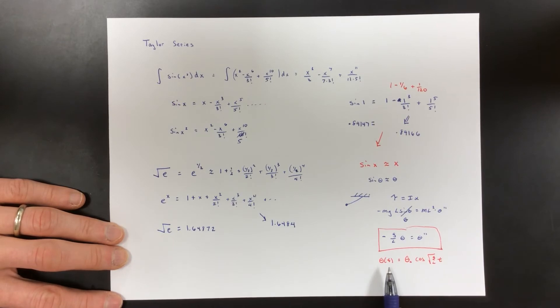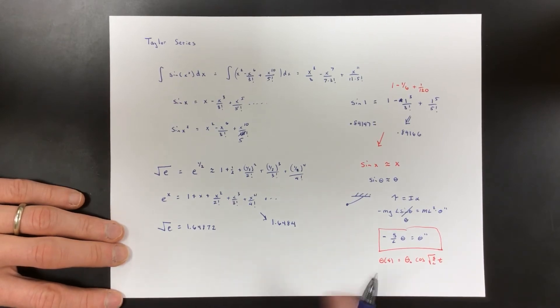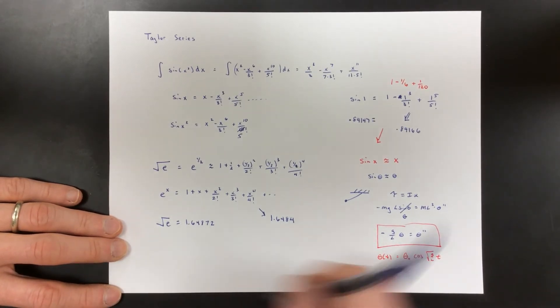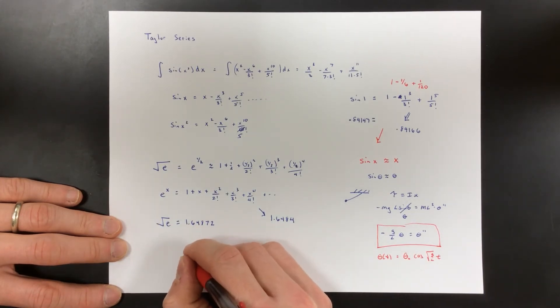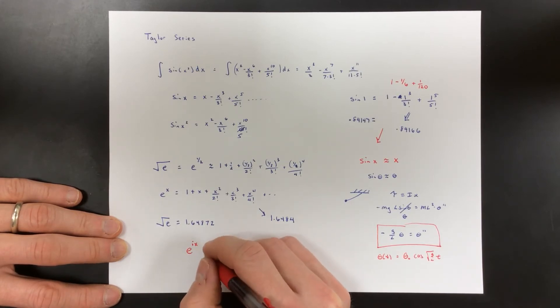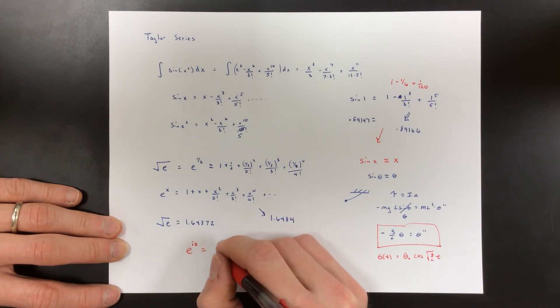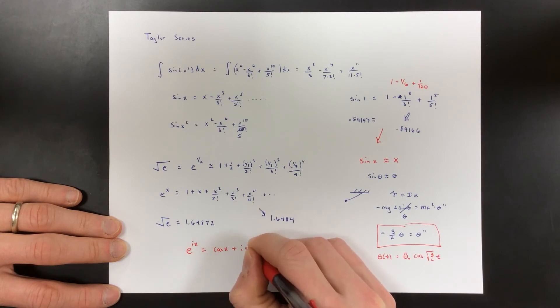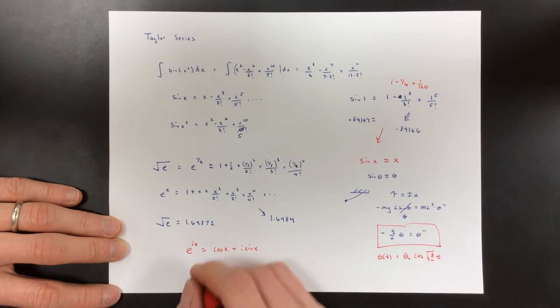There's one more super important one that's a pretty obvious application but it's way beyond this course: e to the ix. And this will actually give us Euler's formula - e to the ix equals cosine x plus i sine x, which leads you to Euler's identity. If you plug in pi for x, e to the i pi equals negative one.